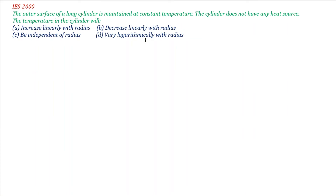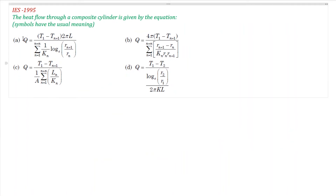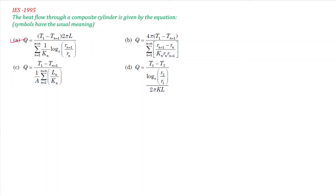The next question is IS-2000: for the temperature distribution in a hollow cylinder with constant outer surface temperature and no heat generation, the temperature varies with radius. We studied this in detail in the previous video — the temperature distribution for a hollow cylinder without heat generation is logarithmic in radius. Answer is straightforward once the concept is clear. IS-1995 also asks about heat flow through a composite cylinder equation — this is a direct formula application from theory. For IS questions on cylinder and sphere, 99% are concept or direct formula based.